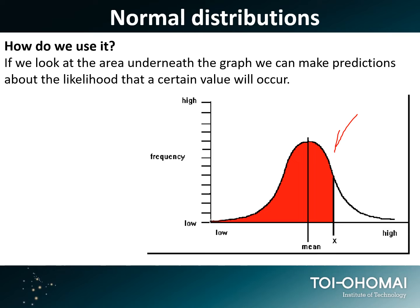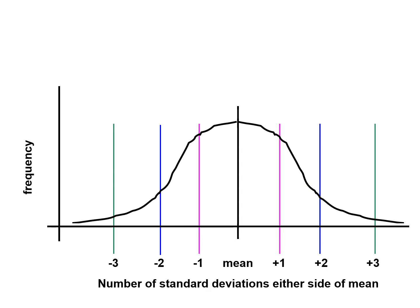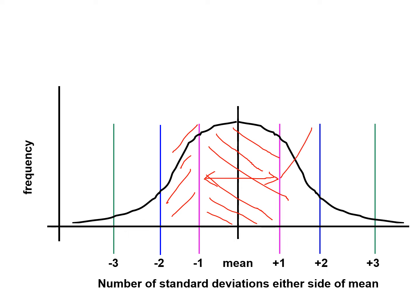We do that by looking at the area underneath the curve. Looking back to the last lecture, if you remember, we can — if we know the standard deviation and the mean — we know that a certain proportion of all the values will fall within one standard deviation of the mean, a certain proportion between two standard deviations, and a certain proportion within three standard deviations of the mean.